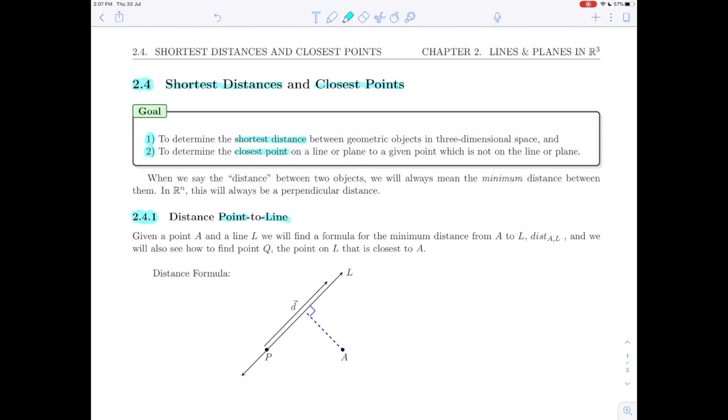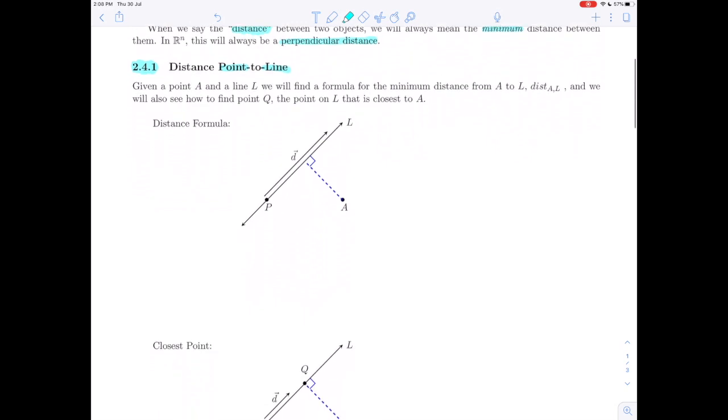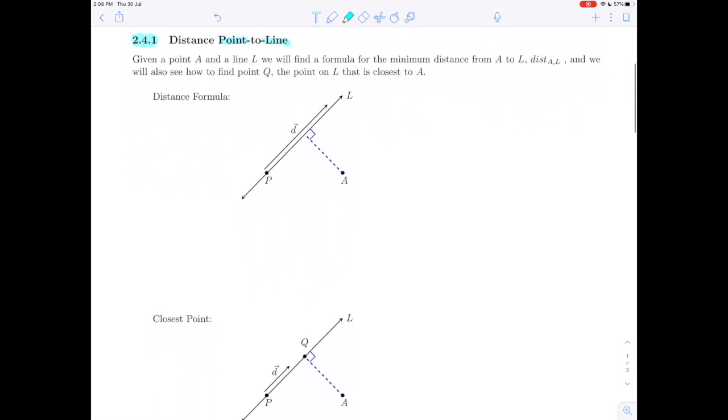And so sometimes, this is just a little note, sometimes we'll just say distance, and when we say the distance between two objects we'll always mean the shortest or the minimum distance, and in Rn, so in particular in three-dimensional space, this is always going to be a perpendicular distance.